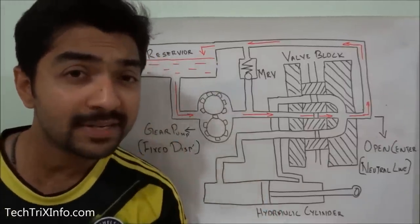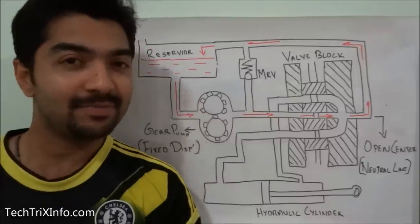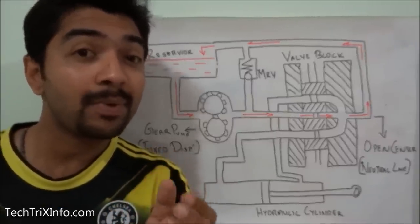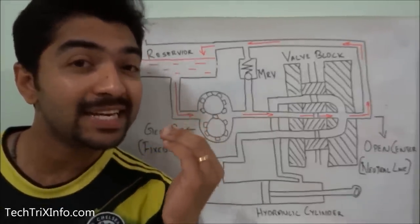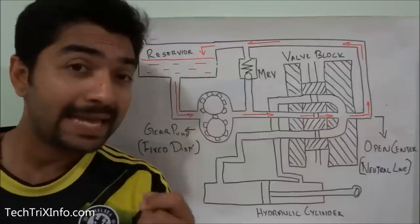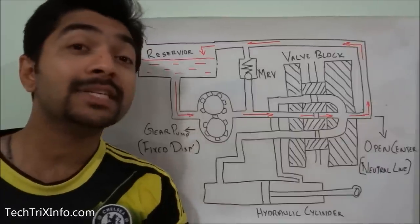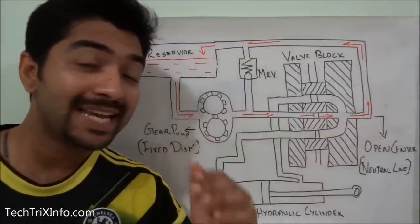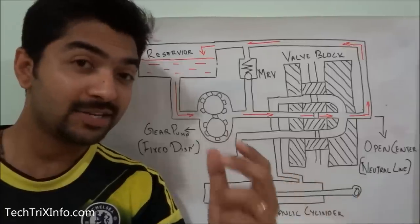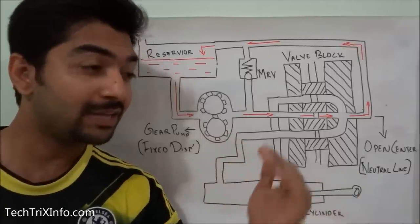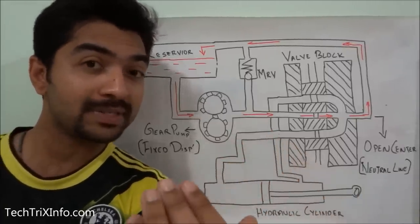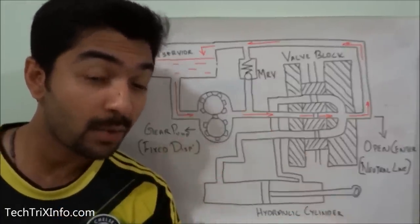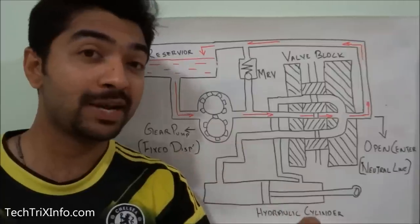In an open-centered hydraulic system or hydraulic circuit, it employs a pump which can provide only a continuous flow. It is called open-centered because it has an open center in the control valve, so that the flow can route through this open center directly back to the reservoir without getting connected towards the pressure line.